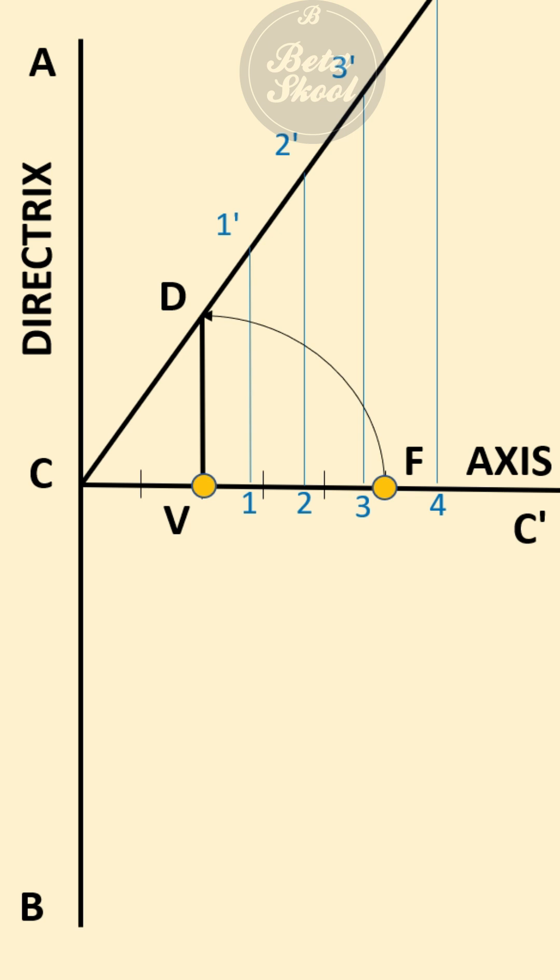Now take 1-1' as the radius and F as the center, cut the line 1-1' at P1. Similarly, you take 2-2' as radius and F as center, cut the line 2-2' at P2.